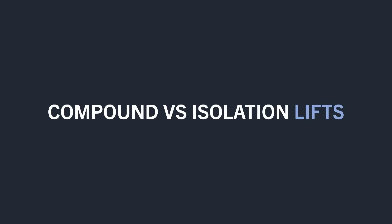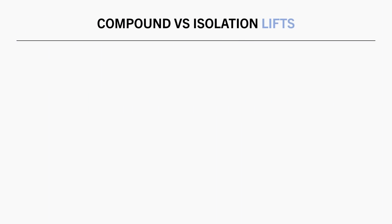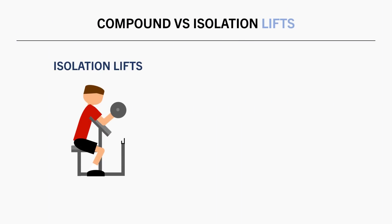First, let's define exactly what the difference is between compound versus isolation lifts. Isolation lifts, by definition, are exercises which only involve movement from a single joint at any given time. In reality, other joints will inevitably move to some extent — it is almost impossible to keep your entire body stationary apart from a single joint moving. However, in a practical sense, we can define isolation lifts as movements coming primarily from a single joint.